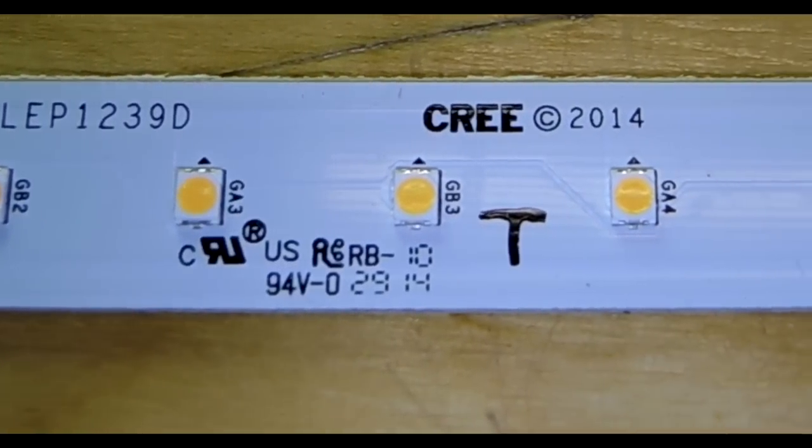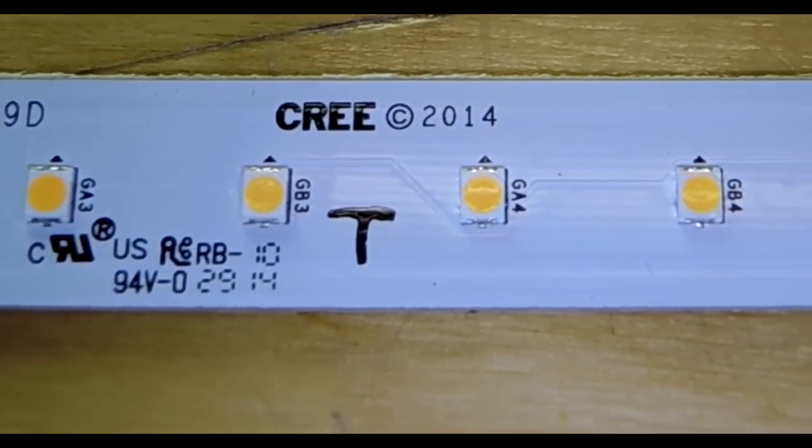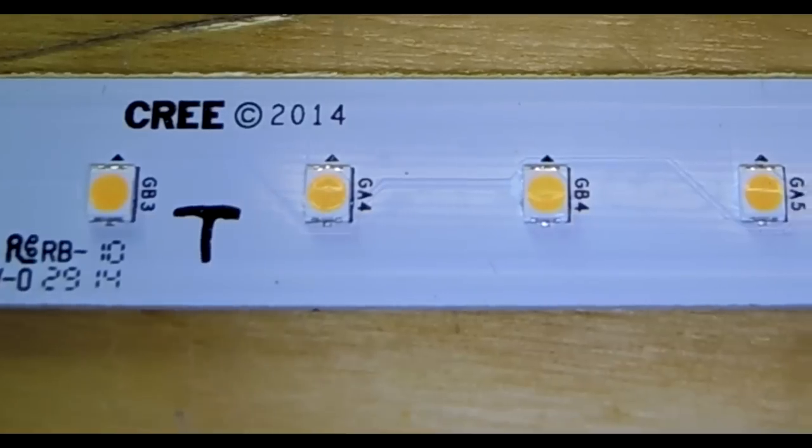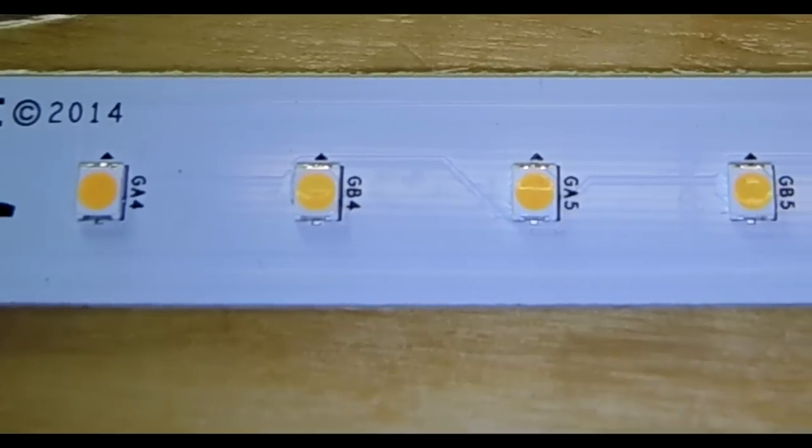On both sides there are some power supply components and then in the middle there are 80 placements of an LED. The LED looks identical for all those placements.